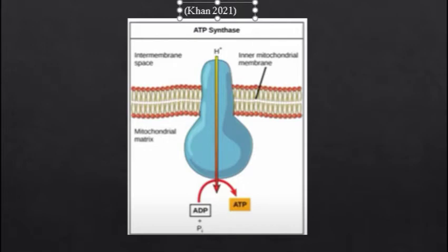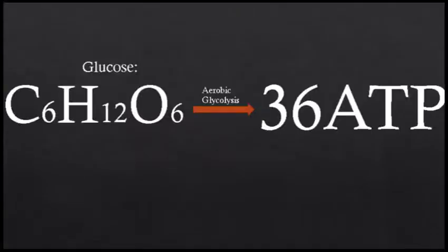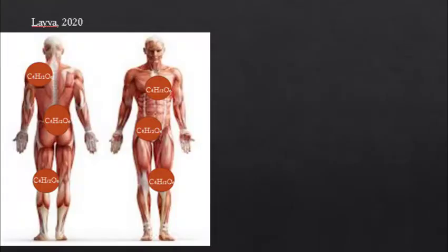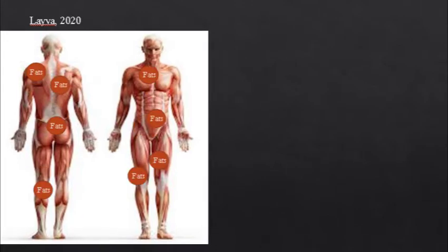In total, the aerobic glycolysis system produces 36 ATP from one molecule of glucose. However, once the glycogen stores have fully depleted, usually after 90 to 120 minutes, fat becomes the main source of energy for the resynthesis of ATP. In a game of basketball which lasts two and a half hours, the depletion of glycogen and use of fat is highly likely.